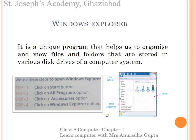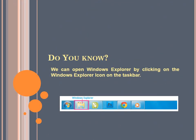Step 1: click on Start button. Step 2: click on All Programs option. Step 3: click on Accessories option. Step 4: click on Windows Explorer option. Do you know? Here is a shortcut to open Windows Explorer by clicking on the Windows Explorer icon on the taskbar.